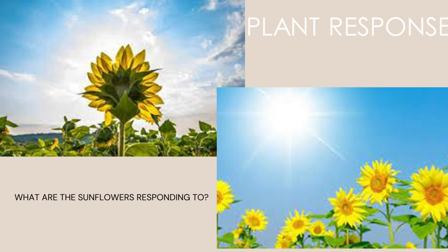Different hormones are responsible for bringing about this response. The reason why these plants are able to move towards the light is because of different hormones. Plants have hormones. When you learn about the endocrine system, you learn about different glands and how they secrete different hormones with different functions. Plants also have hormones.